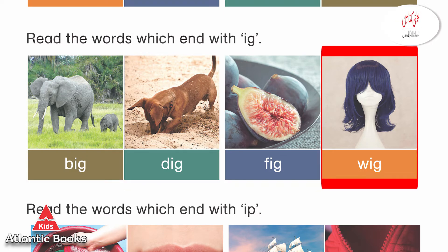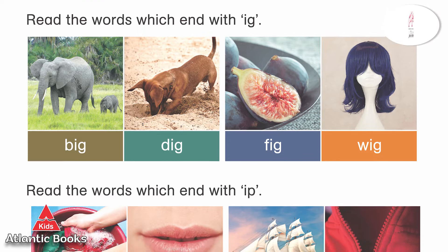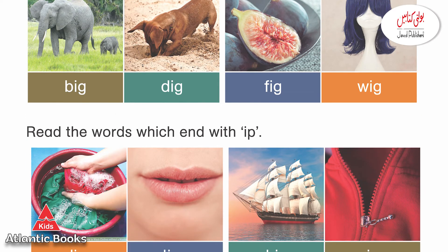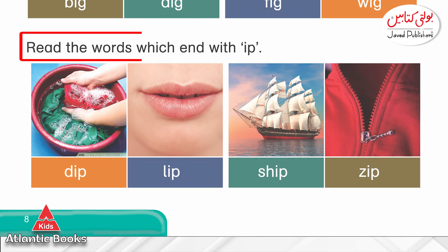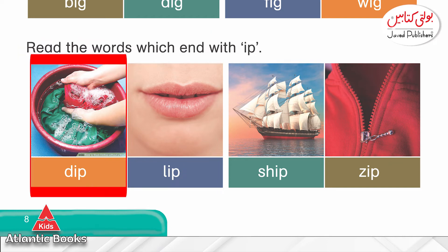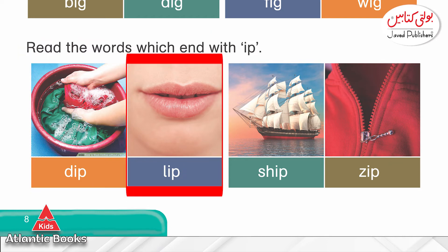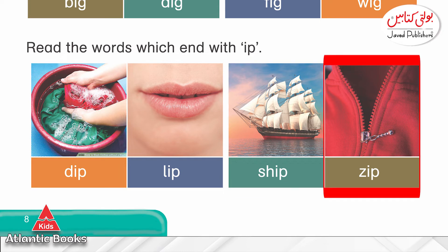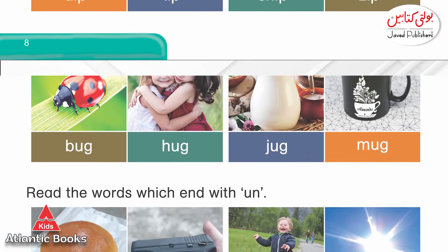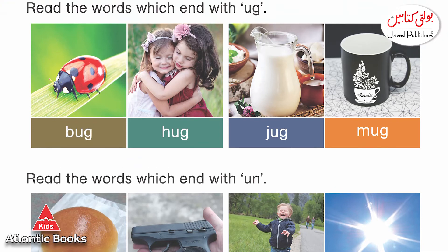Page 8's last combination is I and P, which makes the sound 'ip'. The words are: dip, lip, ship, and zip.